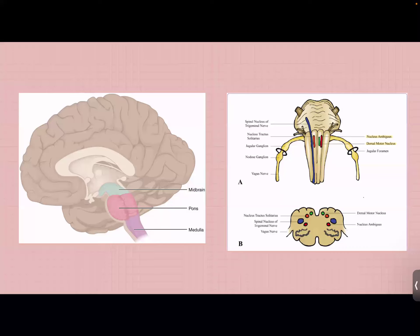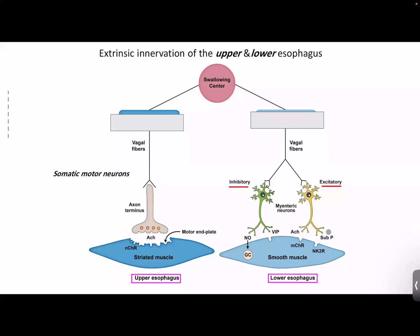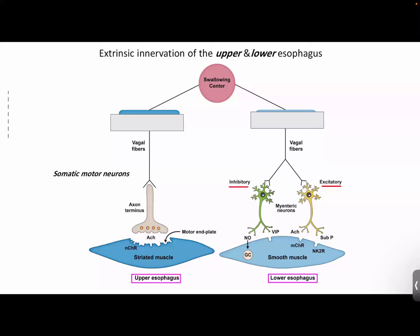In the lower two-thirds smooth muscle, we use the myenteric plexus. Unlike the vagus-only contraction above, here we have both inhibitory and excitatory neurons. Just above the food bolus we have excitatory neurons causing contraction to push food down; below the food bolus we have inhibitory neurons causing relaxation. This contraction above and relaxation below makes peristalsis even more efficient.